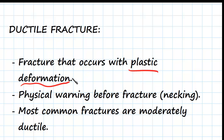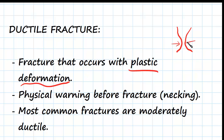We call this necking. Just to remind you, necking is that shape that narrows in a specimen — that narrow shape there. That's where a specific weak point in the structure has started to thin and physically deform — plastic deformation.